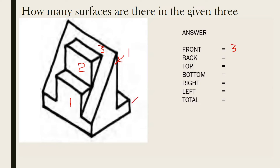Then the down part, it's two — we have to take it as the second surface. So two surfaces from the back. This lengthy one is one, then this short one at the back is the second surface. So two surfaces from the back.